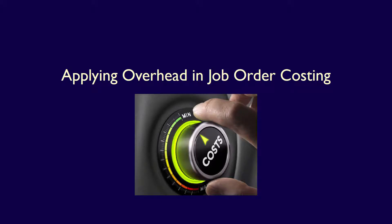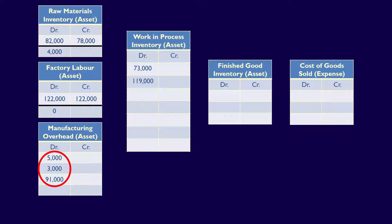In this video, we're going to determine how to apply overhead to Camilla's current custom order. In the current month, Camilla has $99,000 of manufacturing costs in their manufacturing overhead account. However, unlike the direct material and direct labor, these costs cannot be directly traced to the current job, because all the manufacturing overhead costs relate to the production process as a whole.